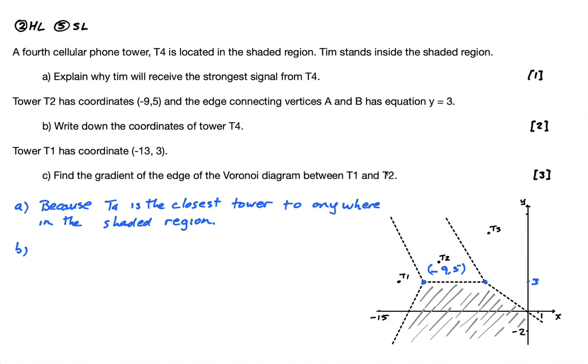Write down the coordinates of tower 4. Okay, so guys, it's a Voronoi diagram, which means the edges are the perpendicular bisectors of the sites, which in this case are the towers. So if this is T2, then T4 has to be exactly, like this is like a line of symmetry, it has to be down here. This is T4. So it's going to be at negative 9, because it's not moving, because this is a horizontal line, it's going to be at negative 9.